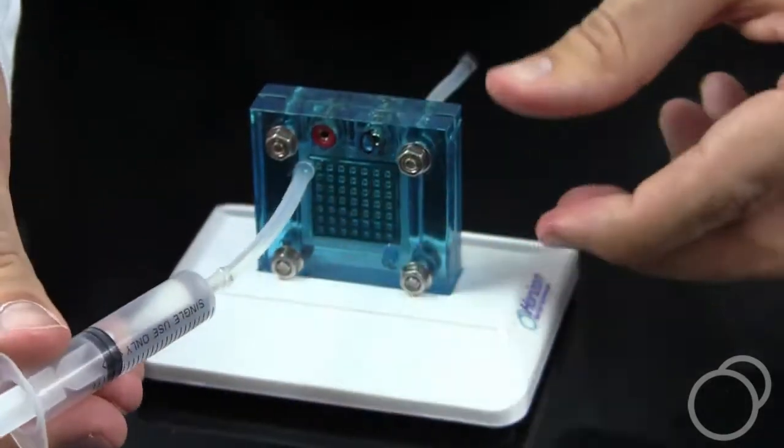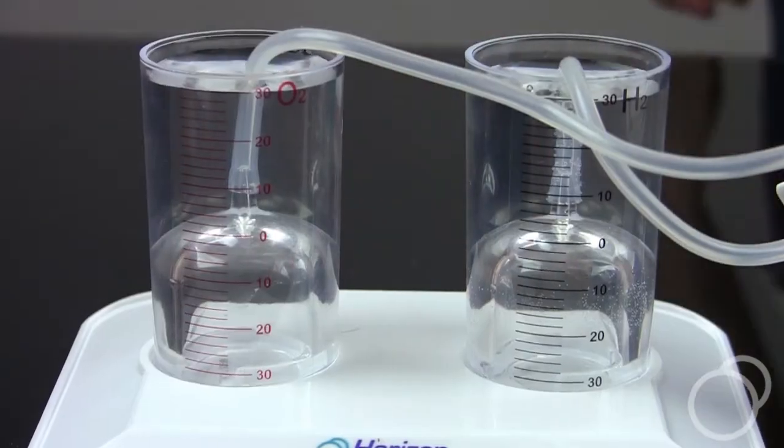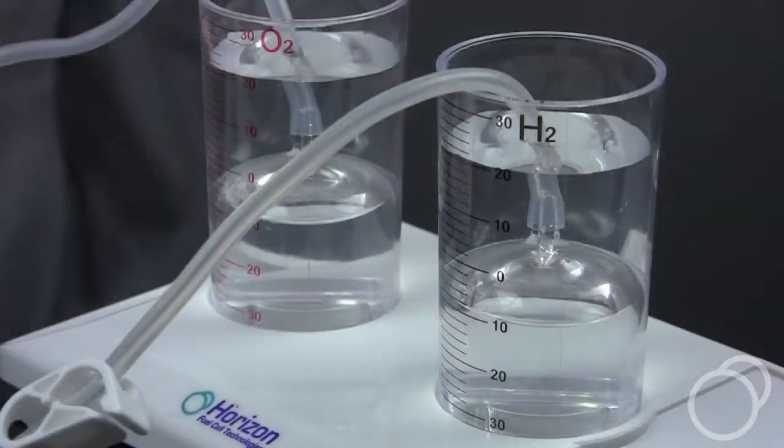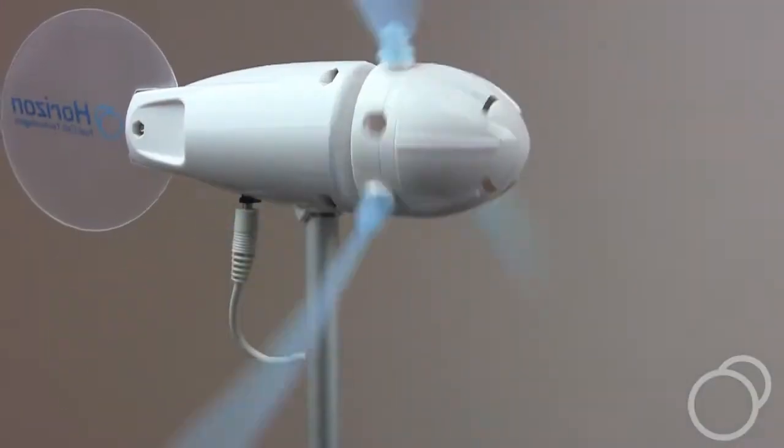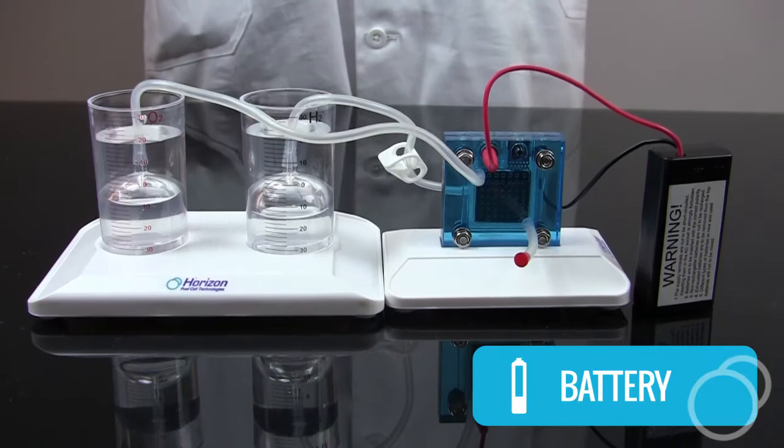After being filled with distilled water, the reversible fuel cell can use an electric current to split that water into hydrogen and oxygen, storing them safely in two cylinders. The wind turbine can be used to provide that current or the included battery pack.